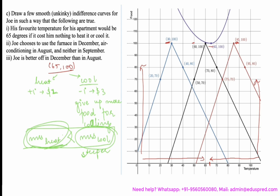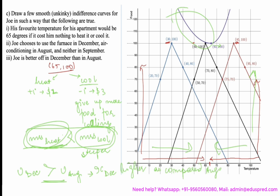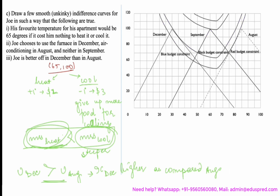Note that after 65 degrees, when he is trying to cool it, the indifference curve is steeper compared to the portion when he is trying to heat the room. Be very careful that the indifference curve is not identical around 65 degrees — it has a different MRS to the left and the right. Joe is better off in December than in August, meaning his utility is higher in December, so the indifference curve for December would be higher compared to August. If I draw the indifference curves for both months, I get this graph.